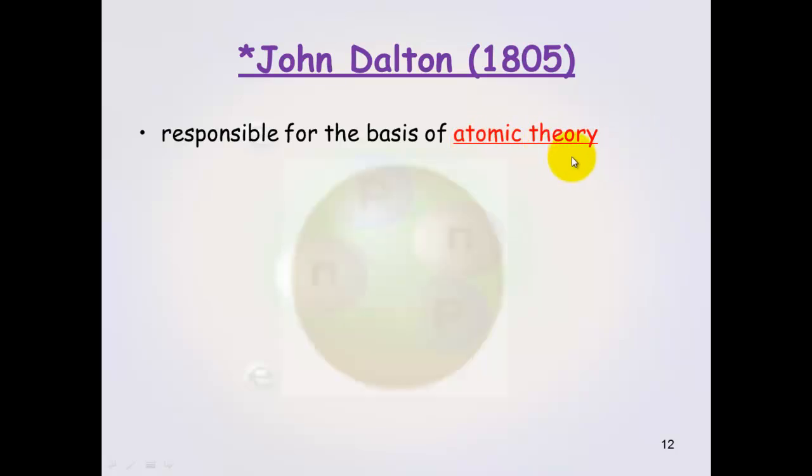John Dalton. John Dalton is important because he is responsible for the basis of atomic theory that we know it today. He came up with a model of an atom which is called the billiard ball model. And it is called the billiard ball model because it is a solid mass. He thought that an atom was a solid round ball with nothing inside it.